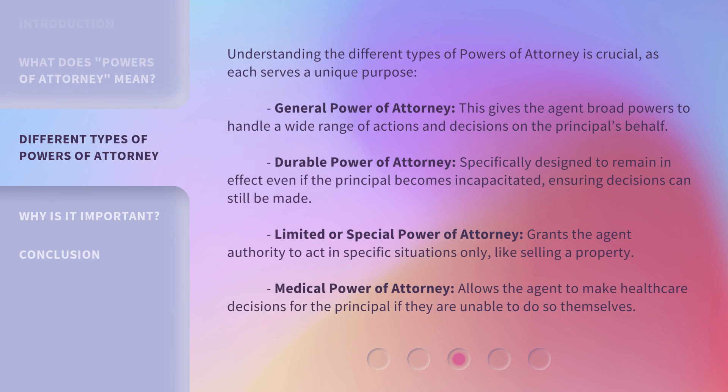Understanding the different types of powers of attorney is crucial, as each serves a unique purpose. General Power of Attorney gives the agent broad powers to handle a wide range of actions and decisions on the principal's behalf. Durable Power of Attorney is specifically designed to remain in effect even if the principal becomes incapacitated, ensuring decisions can still be made. Limited or Special Power of Attorney grants the agent authority to act in specific situations only, like selling a property. Medical Power of Attorney allows the agent to make health care decisions for the principal if they are unable to do so themselves.